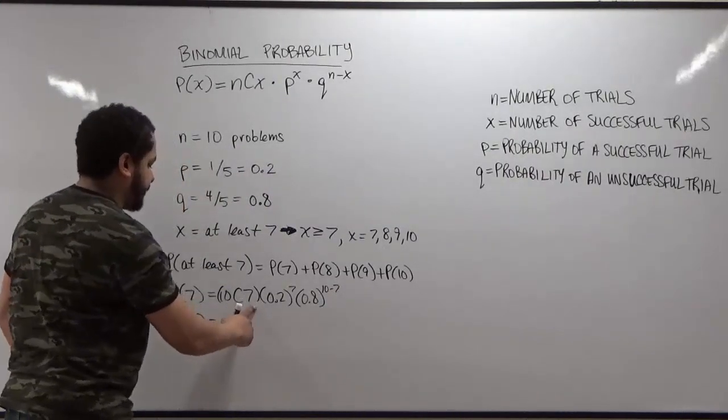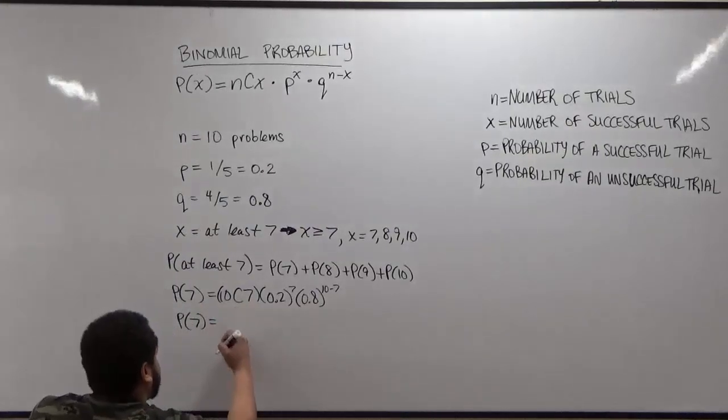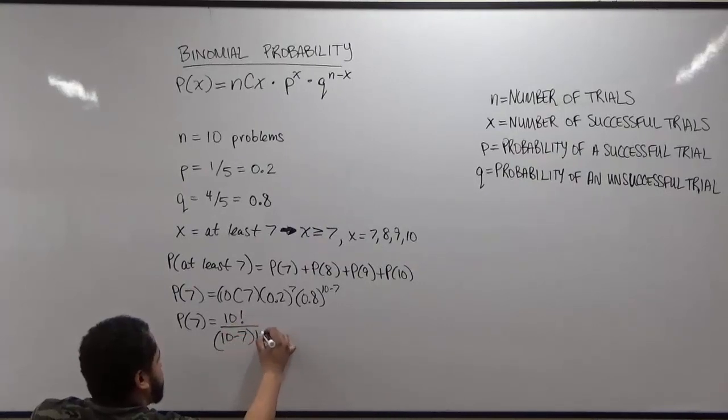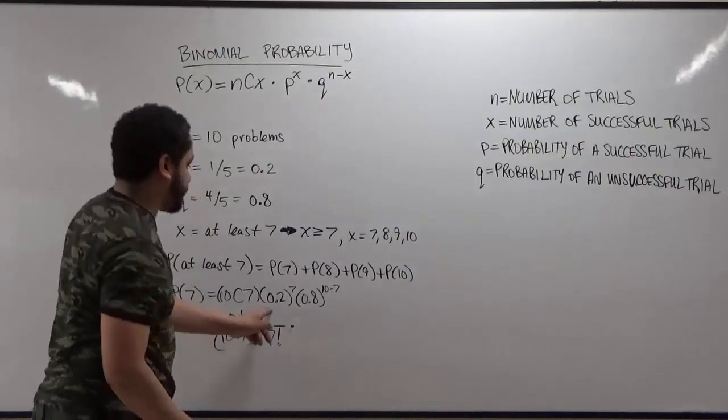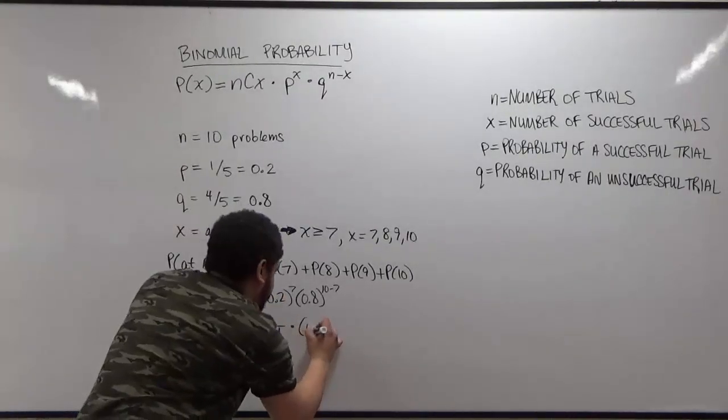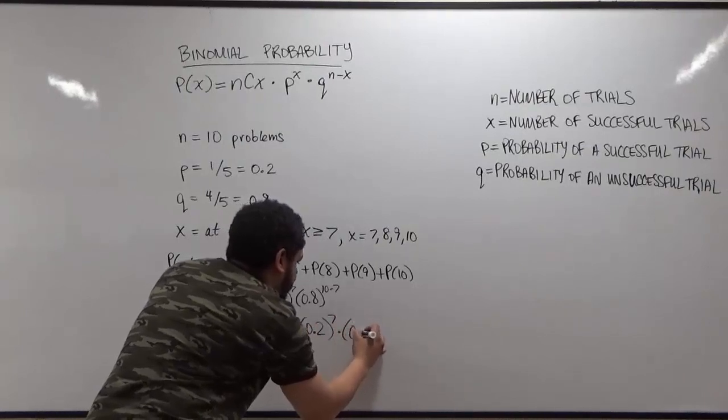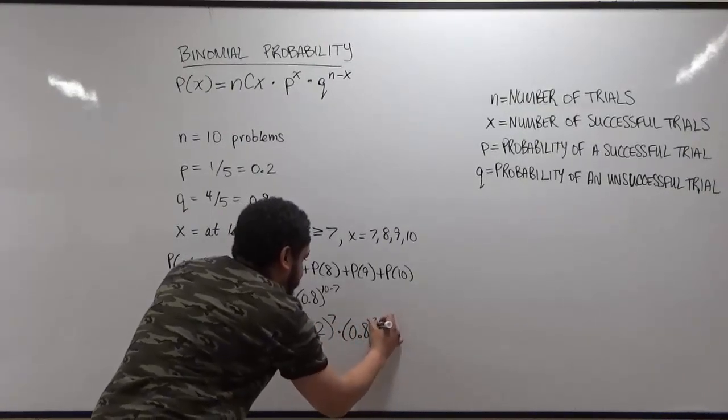here we have the 10 combination 7, which is going to give us 10 factorial over 10 minus 7 factorial times 7 factorial. And this is multiplying by 0.2 to the power of 7. And this is multiplying by 0.8 to the power of 3.